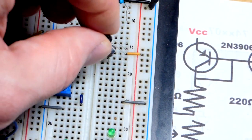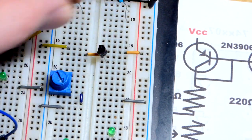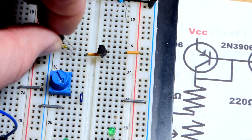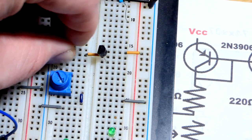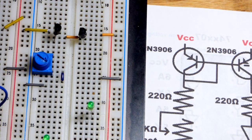The emitter goes to the positive rail, as you can see. So these two are already to the positive rail. And I'll plug it in right there.